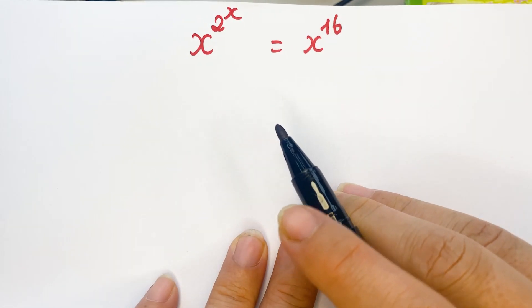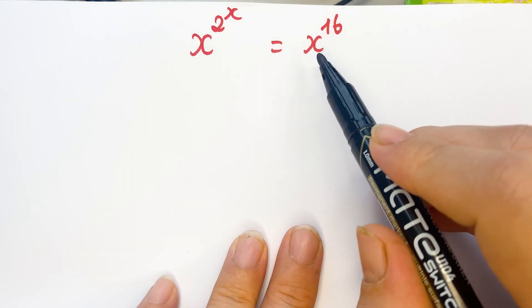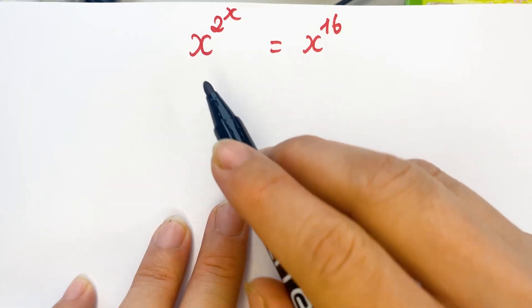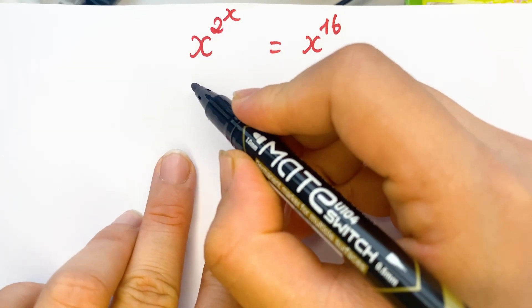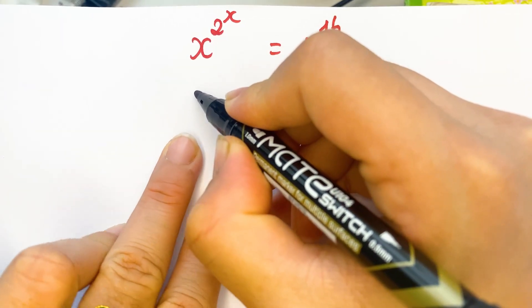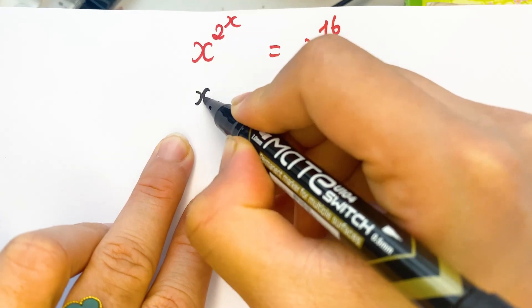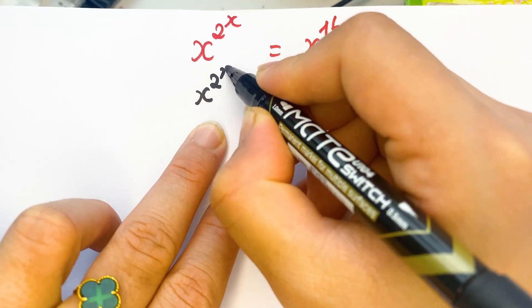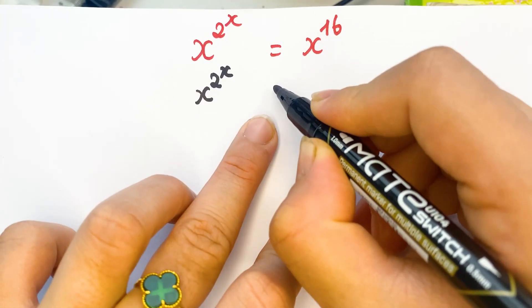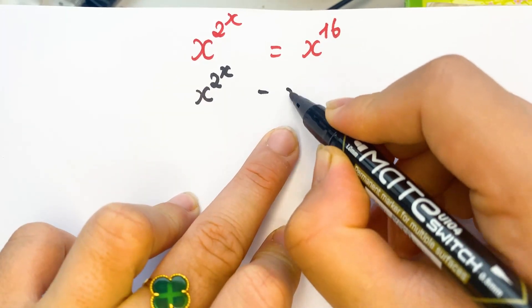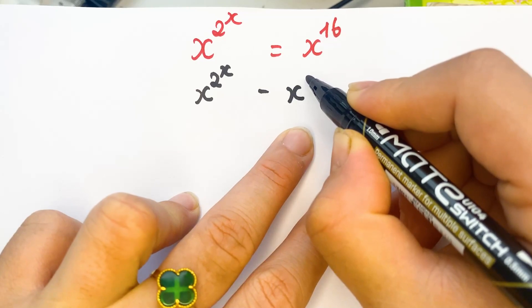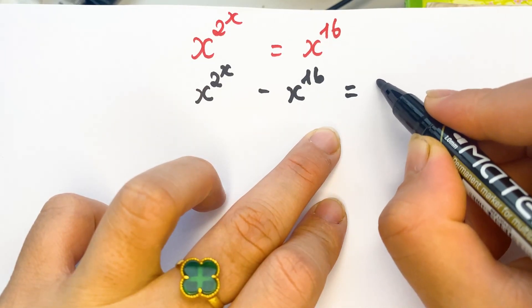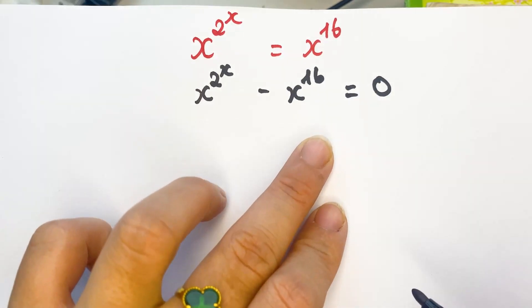Firstly, you need to move x^16 to the left hand side. Therefore, we can write x^(2^x) minus x^16 equals 0.